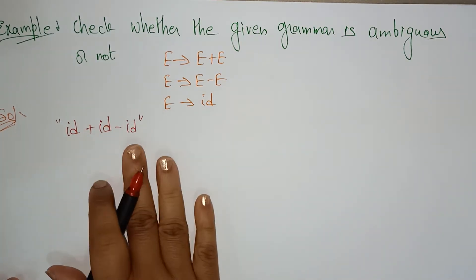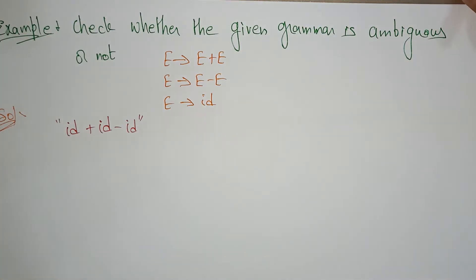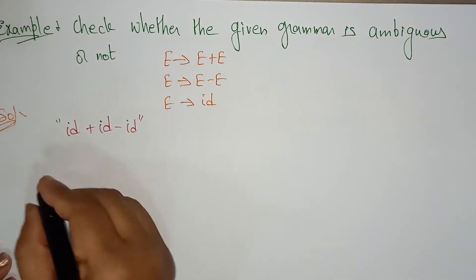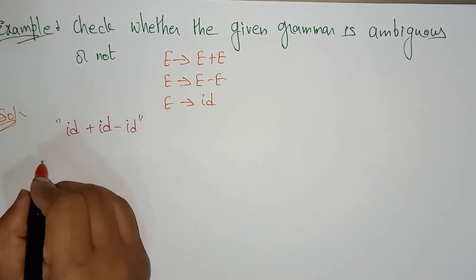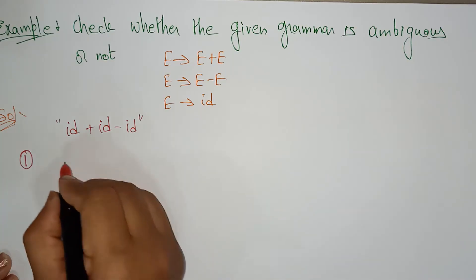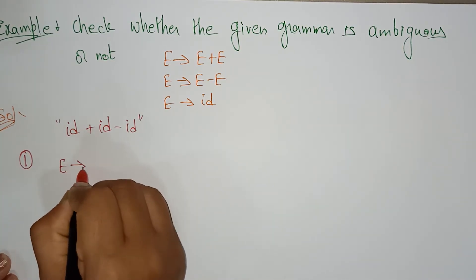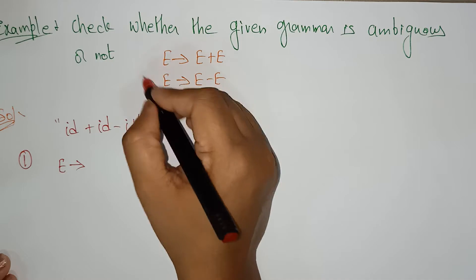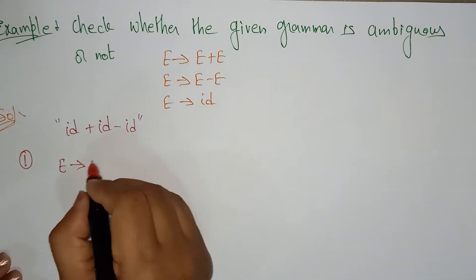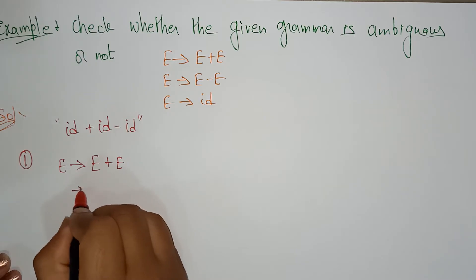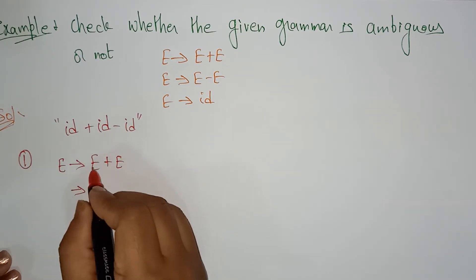This string can be derived in two ways. First, let me take one way. I am using the leftmost derivation. The starting symbol is e. E can be substituted with e plus e. This is a leftmost derivation.